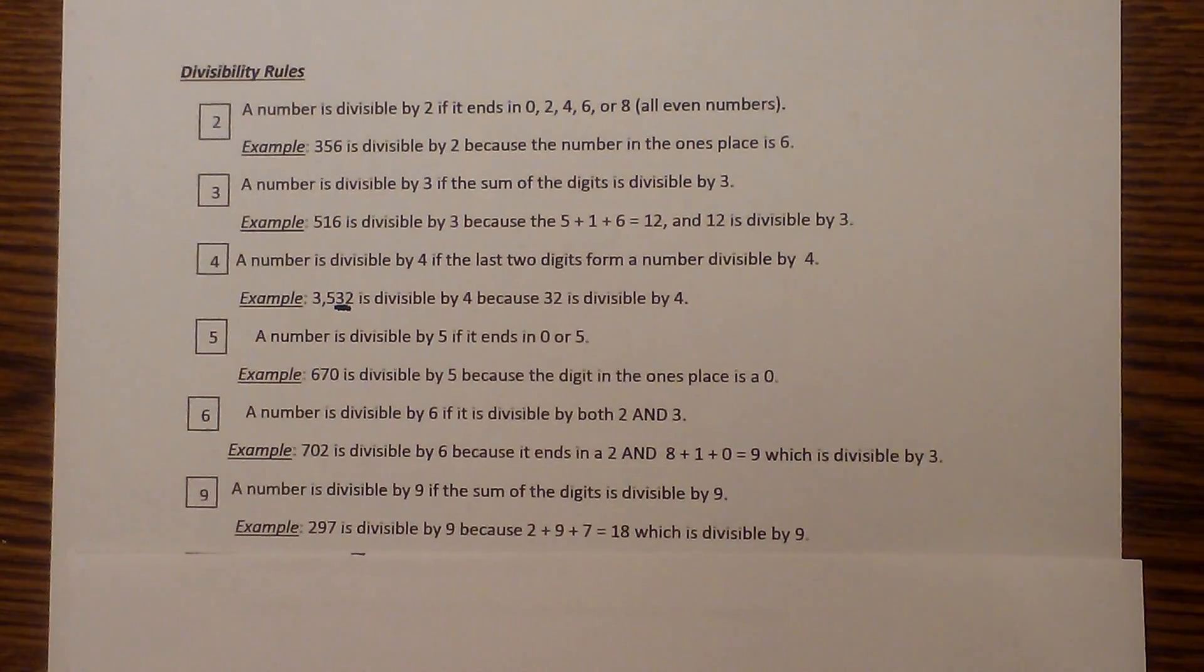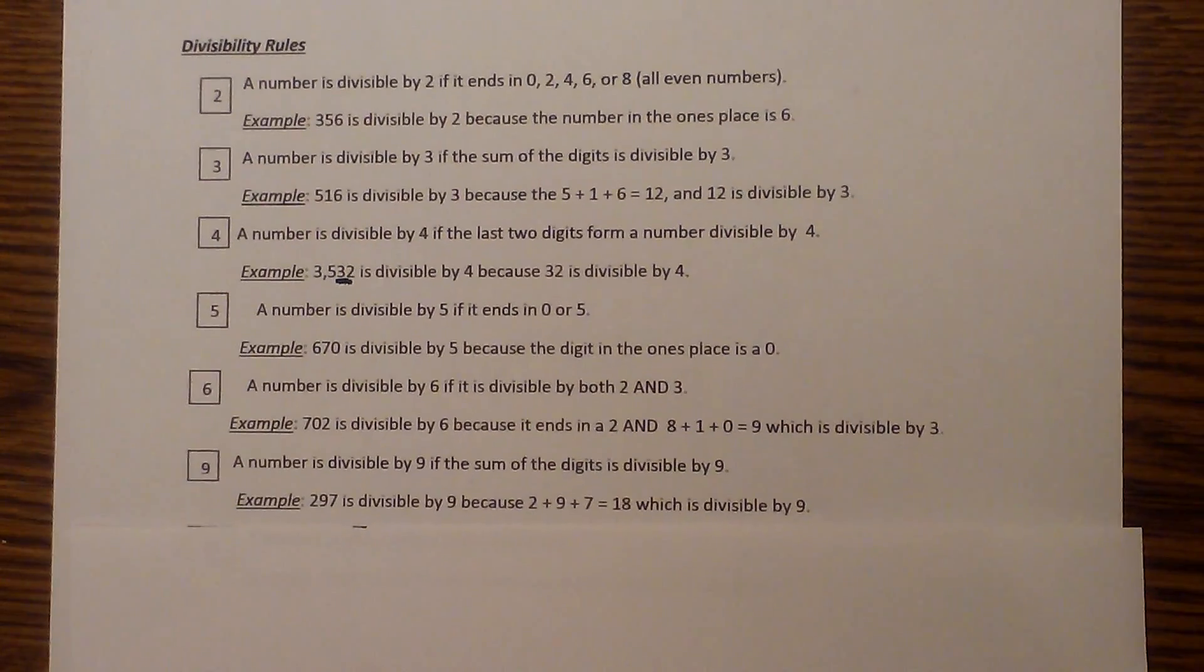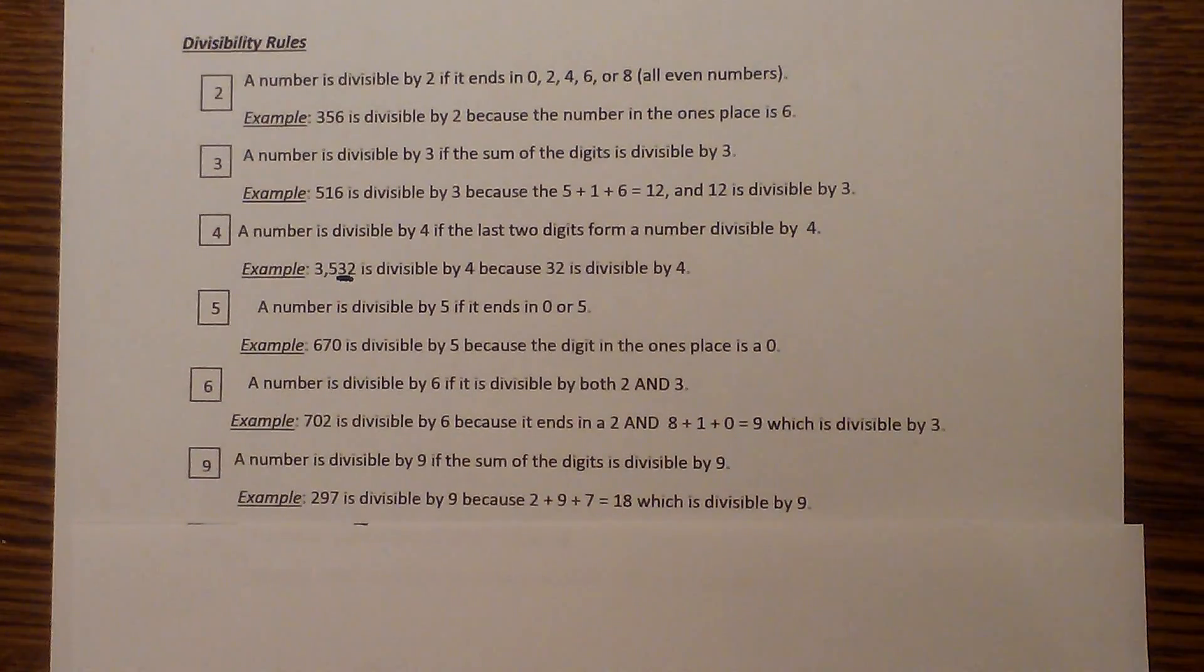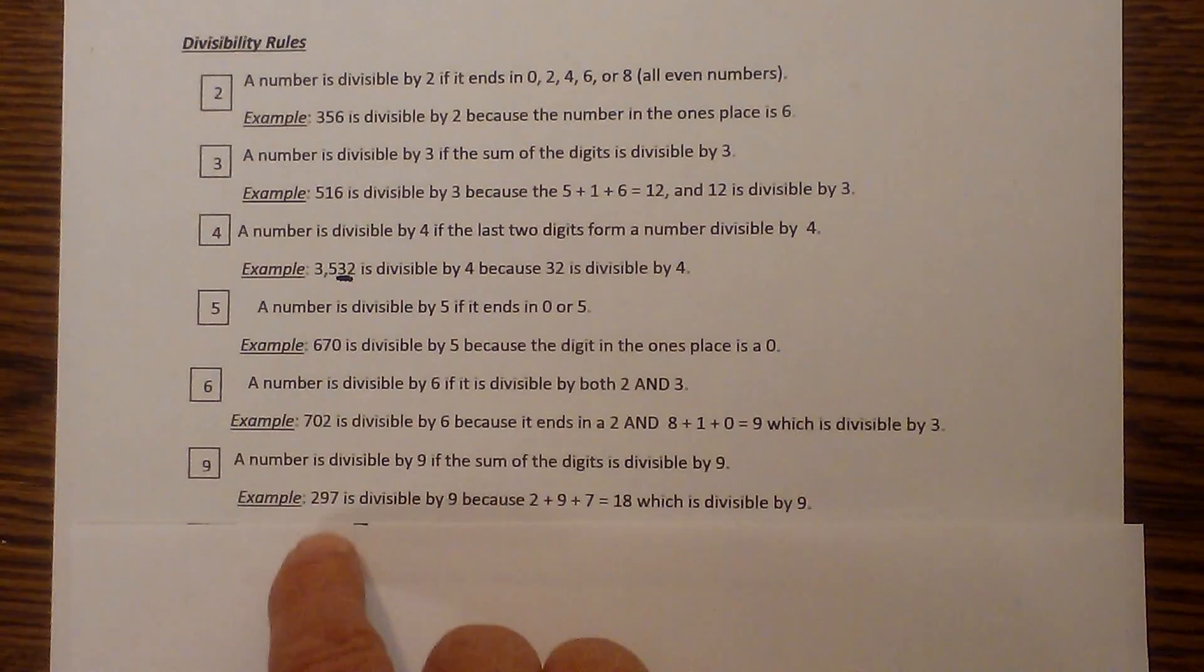Next, a number is divisible by 9 if you add the digits and that sum is divisible by 9. So for instance, 297: 2 plus 9 is 11, plus 7 is 18. 18 is divisible by 9.